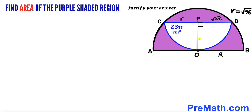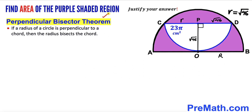Next, I've dropped the perpendicular OP onto chord CD. We can observe that OP is the radius of the smaller semicircle, so OP = √46. Recalling the perpendicular bisector theorem: if a radius is perpendicular to a chord, it bisects the chord. So OP bisects CD into two equal parts, meaning segment CP equals segment PD.